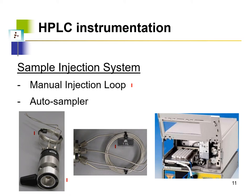The second type of injection system is an auto-injector, which holds a series of vials containing various samples. The machine is programmed to automatically inject each vial in sequence, allowing much greater efficiency and enabling the instrument to run overnight even when the operator is not present.